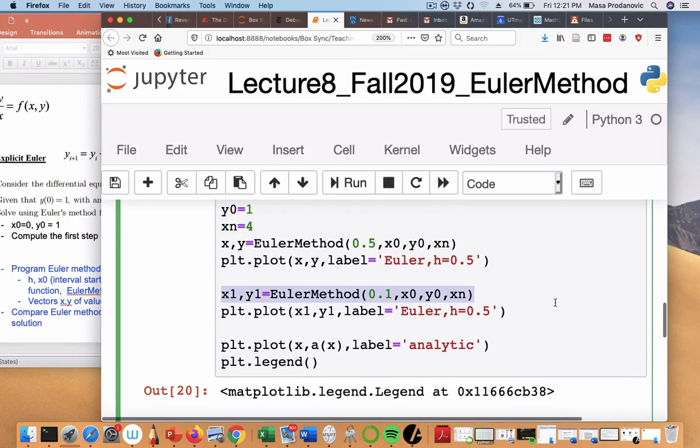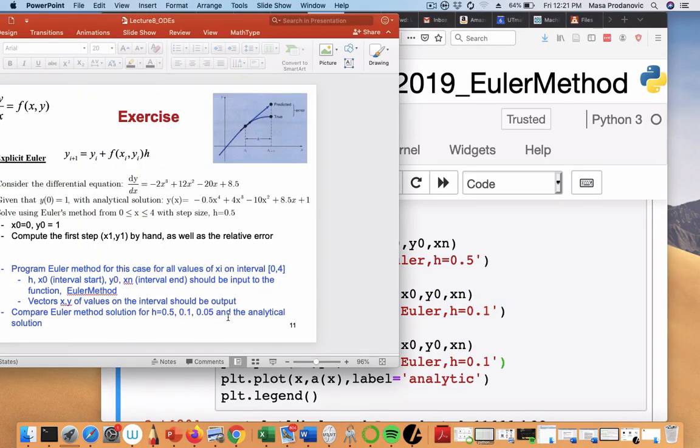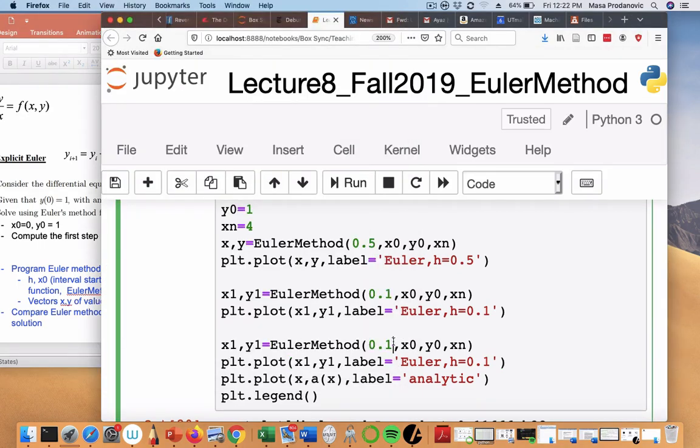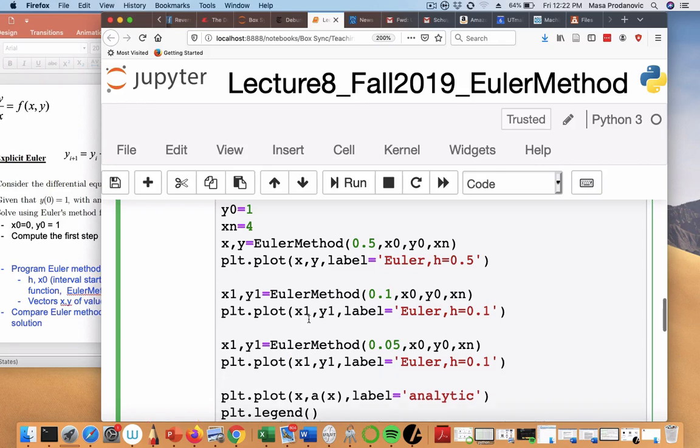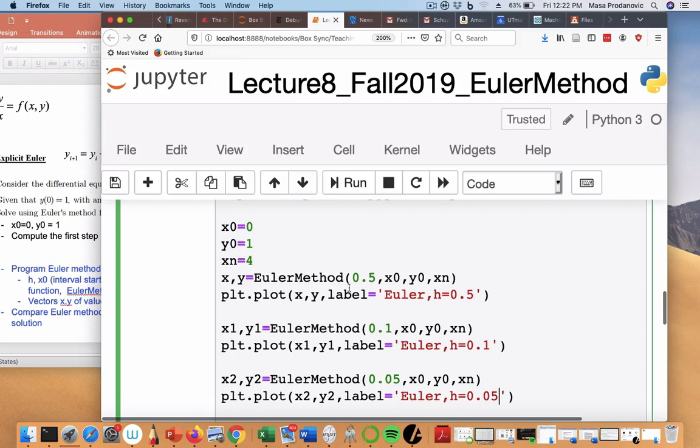And then I'm going to plot that x, y1. And I can now keep doing this. And I'm going to just relabel my plot. And I'm going to keep doing this for one more. What does my problem say? 0.5, 0.1, and 0.05. This is why we create functions, so I can easily play with it and compare it.